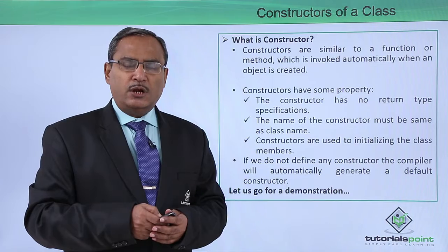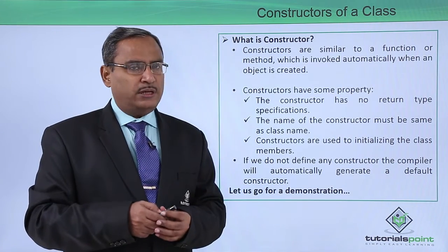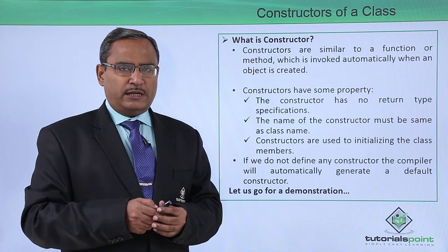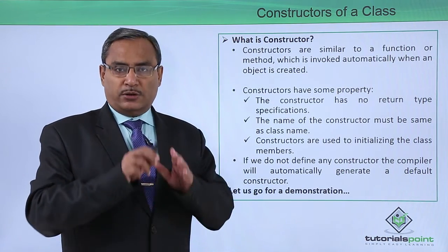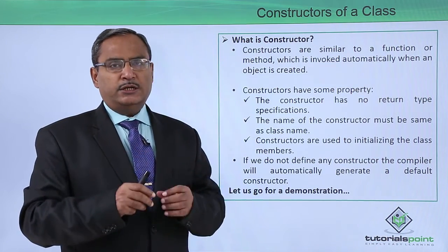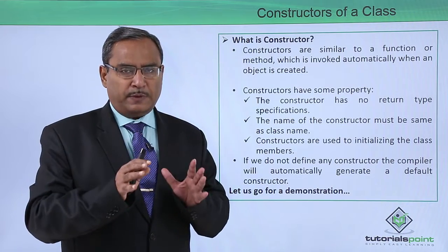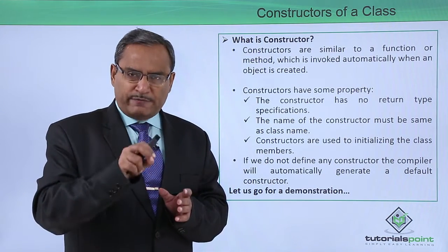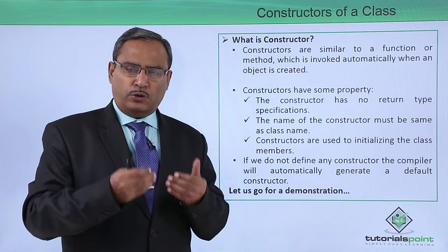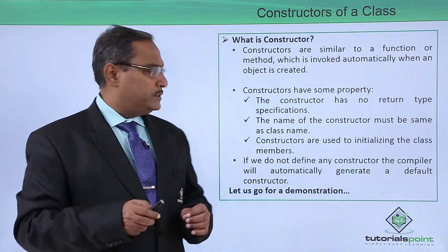We can have two types of constructor. One is the parameterized constructor, where we pass some input arguments to the constructor method. The other is the non-parameterized constructor, which has no input parameter. These constructors are used to initialize the member variables, and that is the main purpose of a constructor. When an object is defined under the class, the constructor method gets invoked automatically and initializes the member variables.